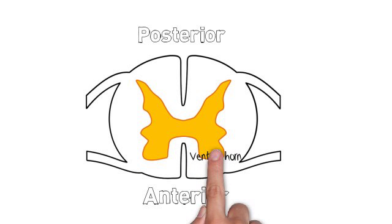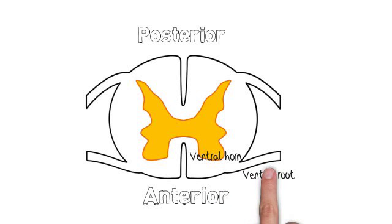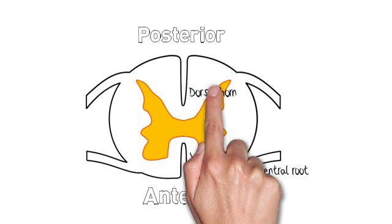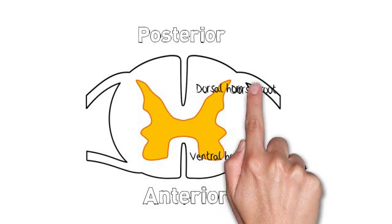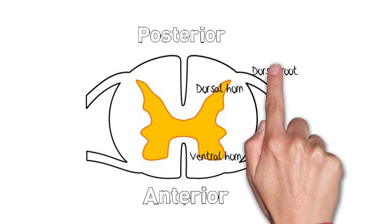Labeled is the ventral horn of the gray matter, where the ventral root or motor axons leave the spinal cord, and the dorsal horn of the gray matter, where the dorsal root or primary afferents enter the spinal cord.